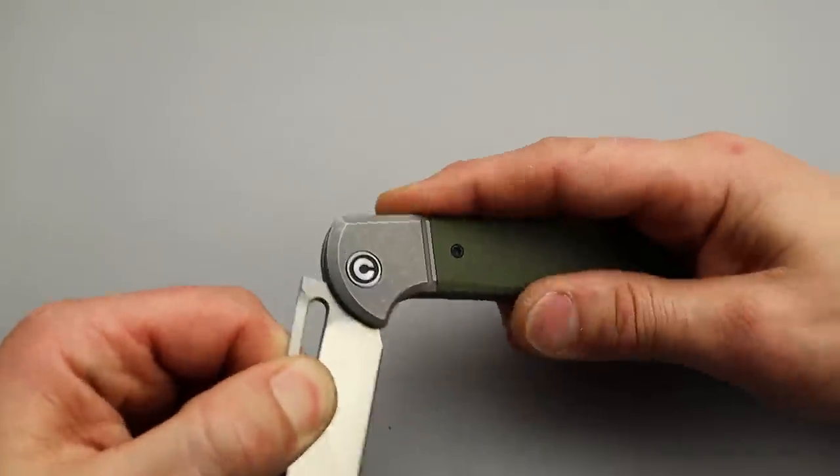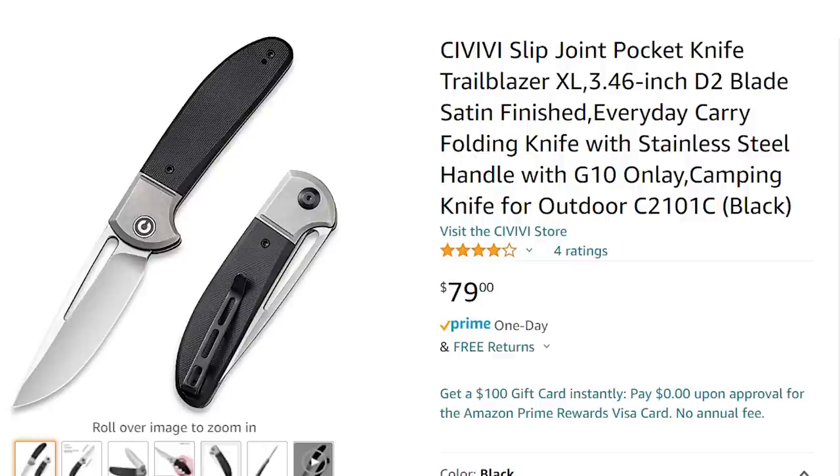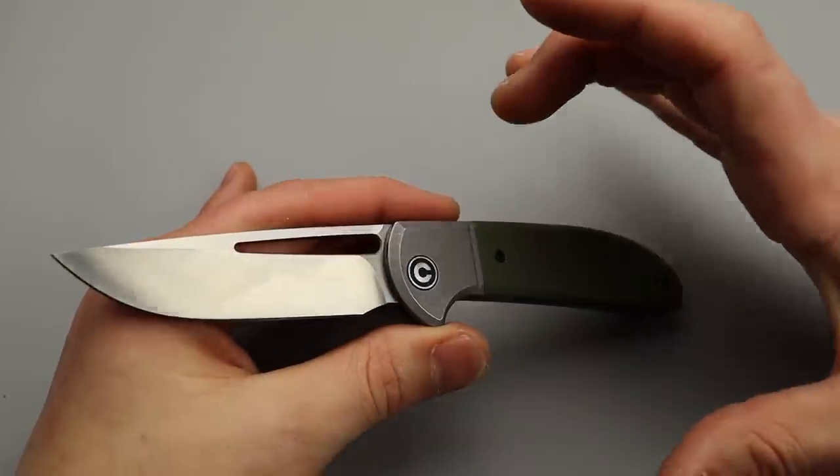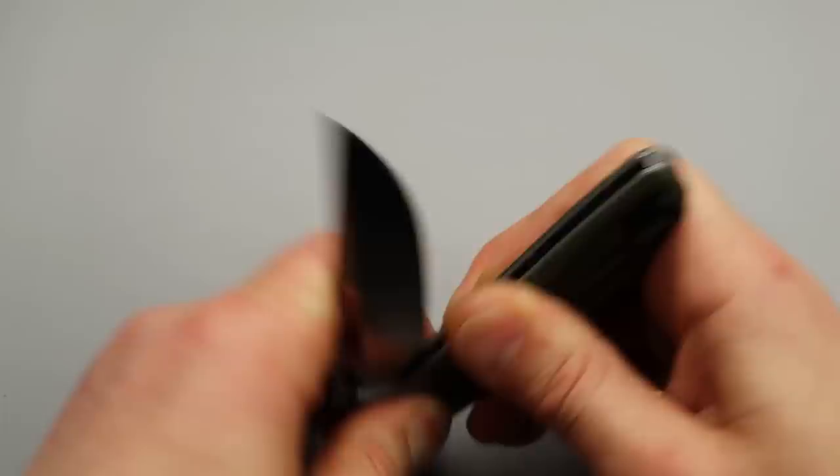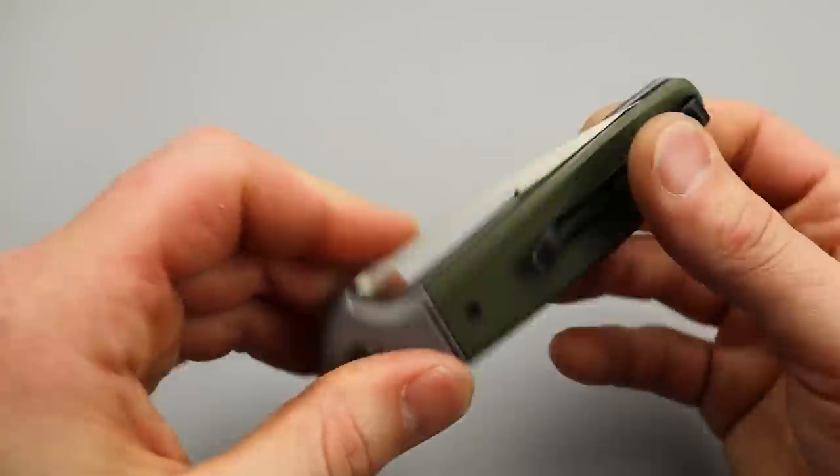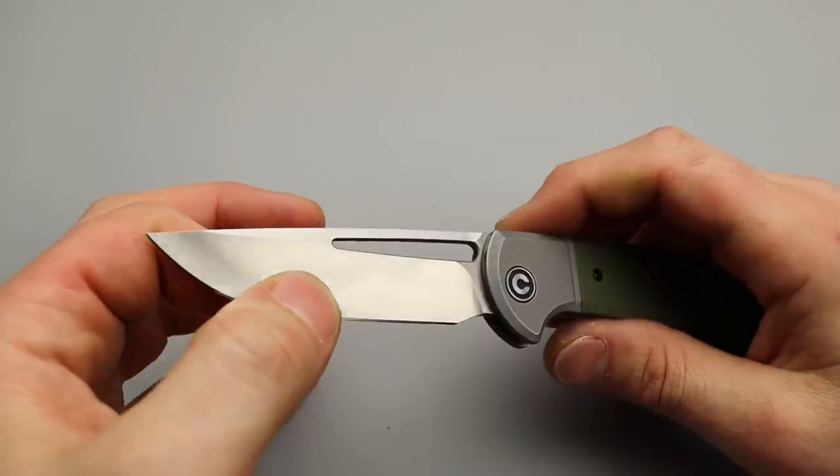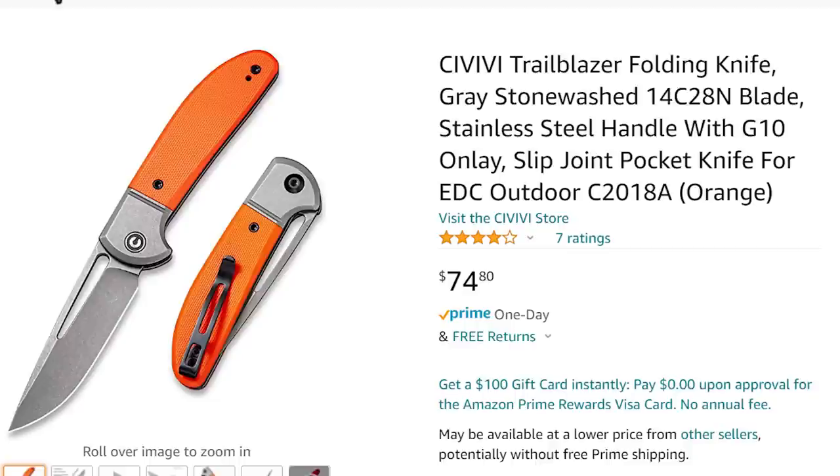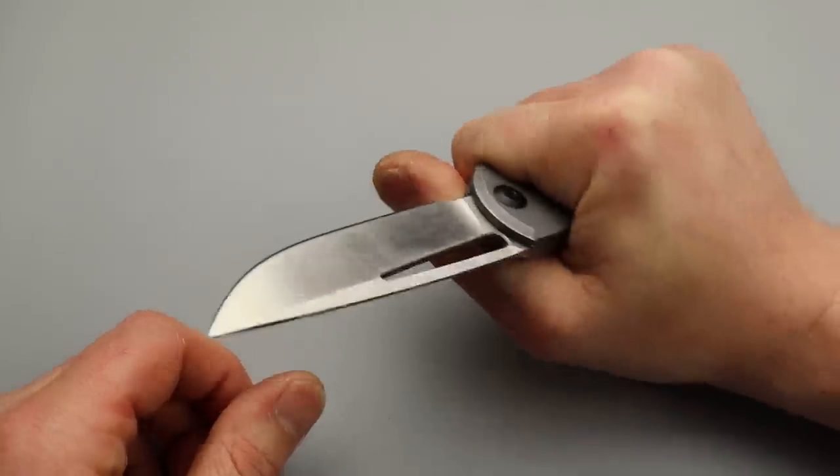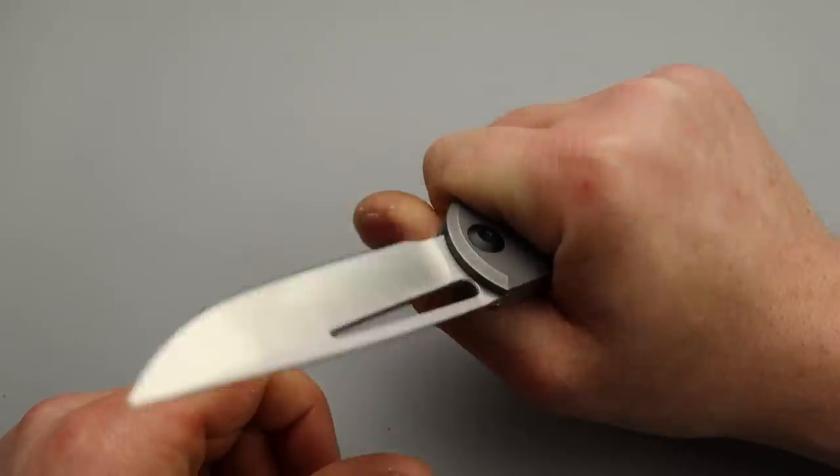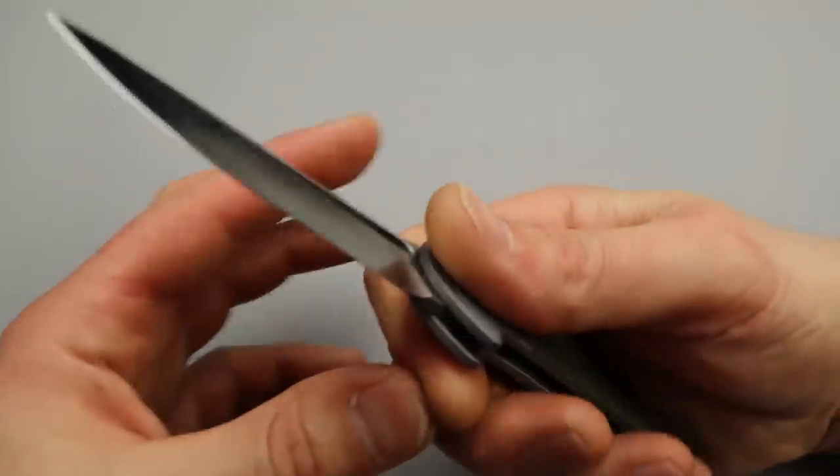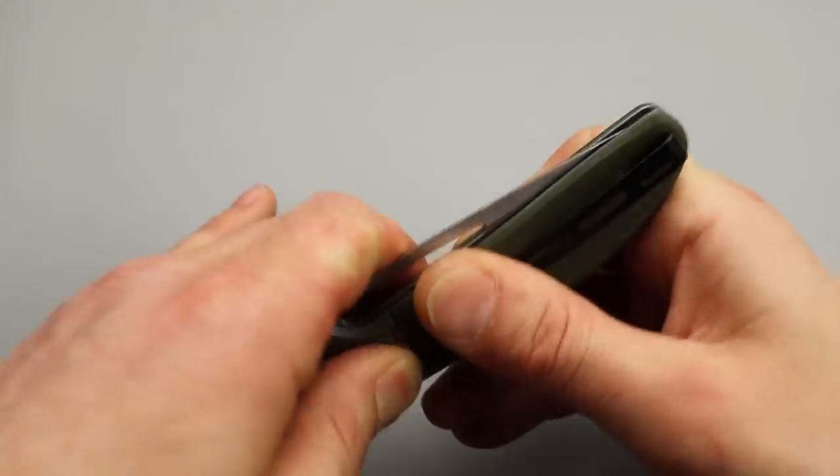Next this is the Trailblazer by Civivi. Now this is the XL version. But they do have a small version of it. This is the XL version. It is a slip joint with a clip. Very modern. D2 steel. But like I said it comes in a small version. So if you're wanting a real knife. Because this is a knife. 100% this is a knife. Super comfortable in the hand. Great ergos. I would love to see this in a locking version. But it is a slip joint.